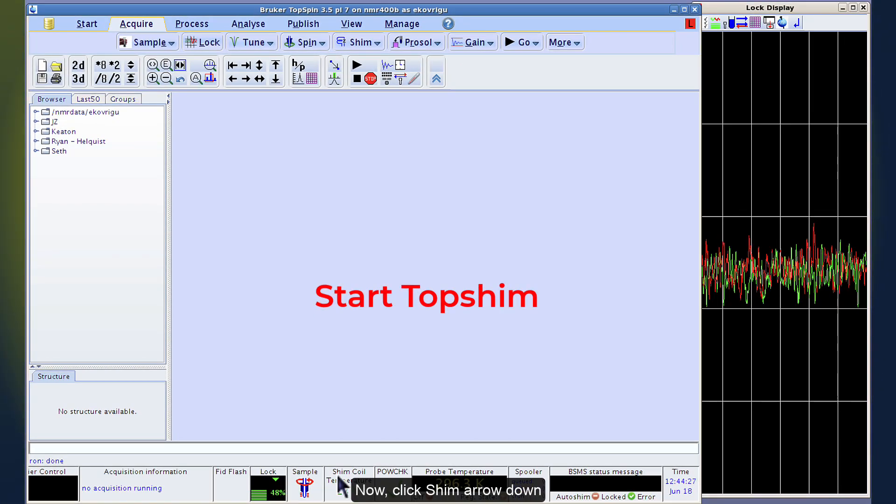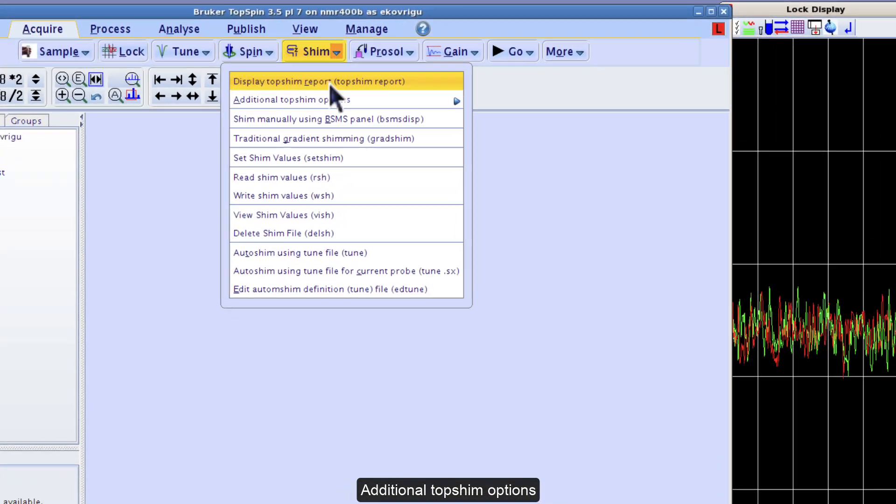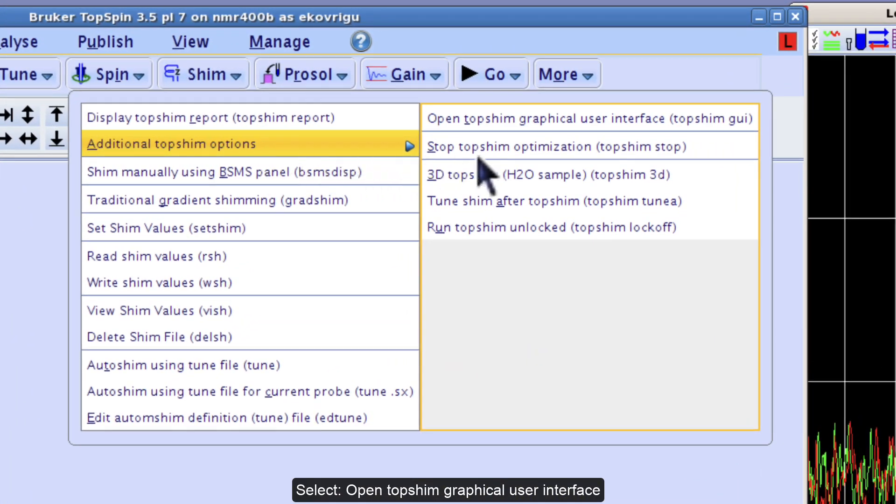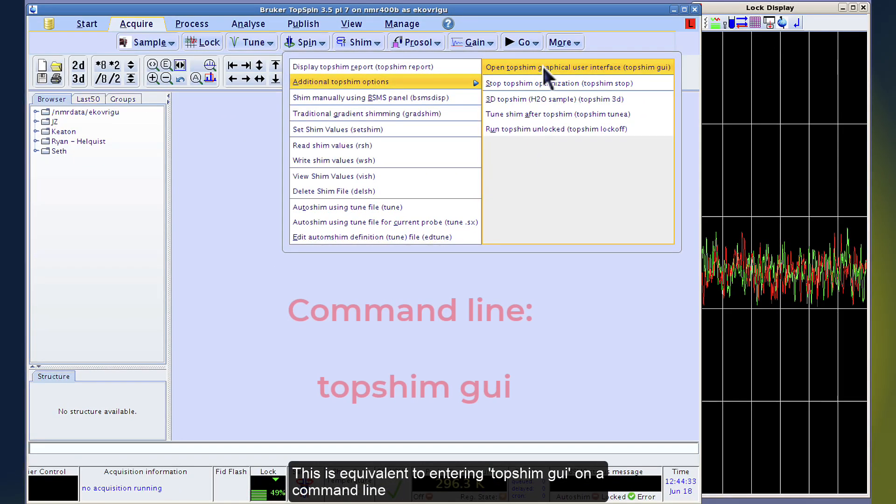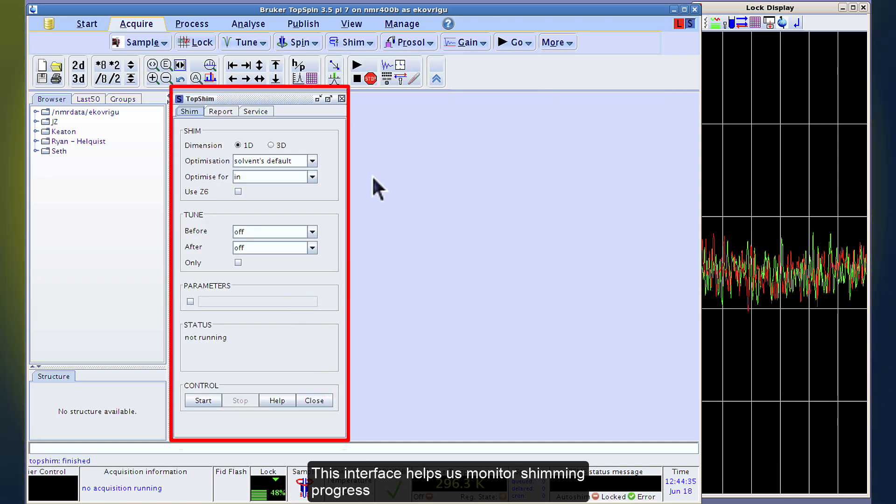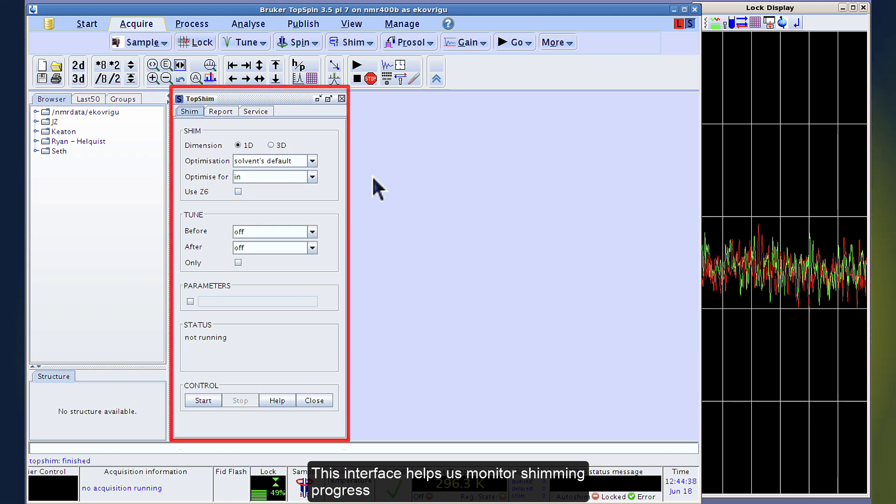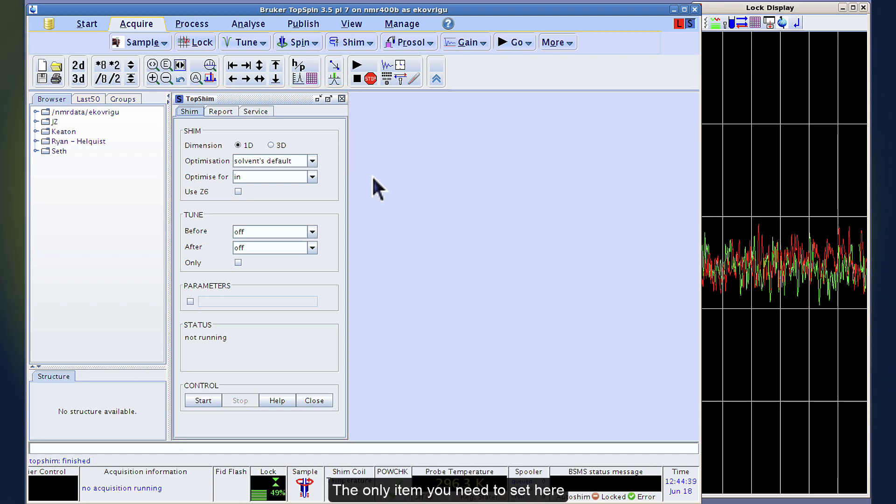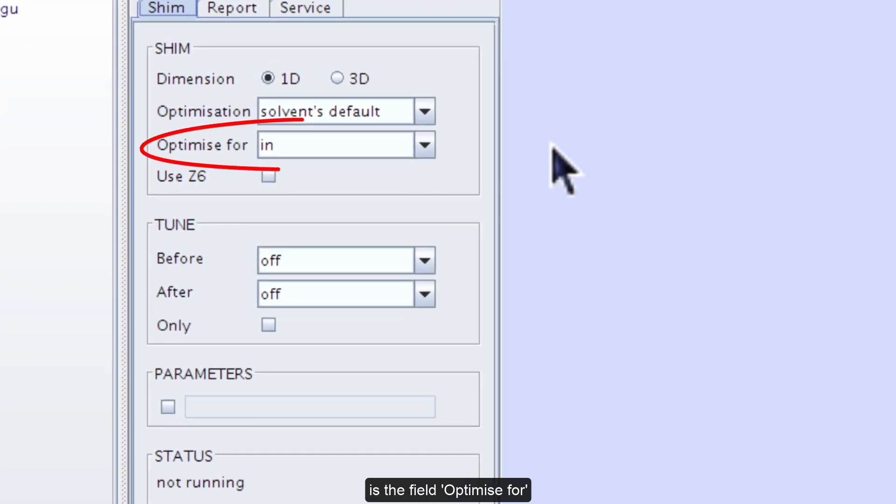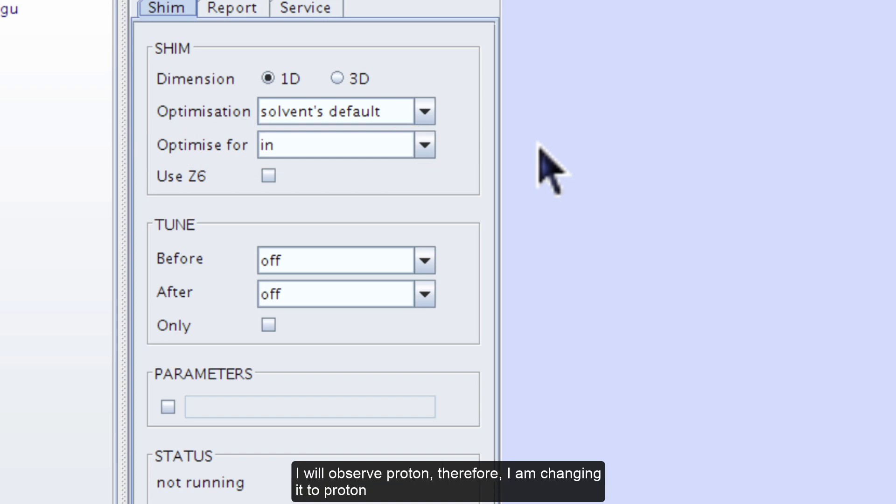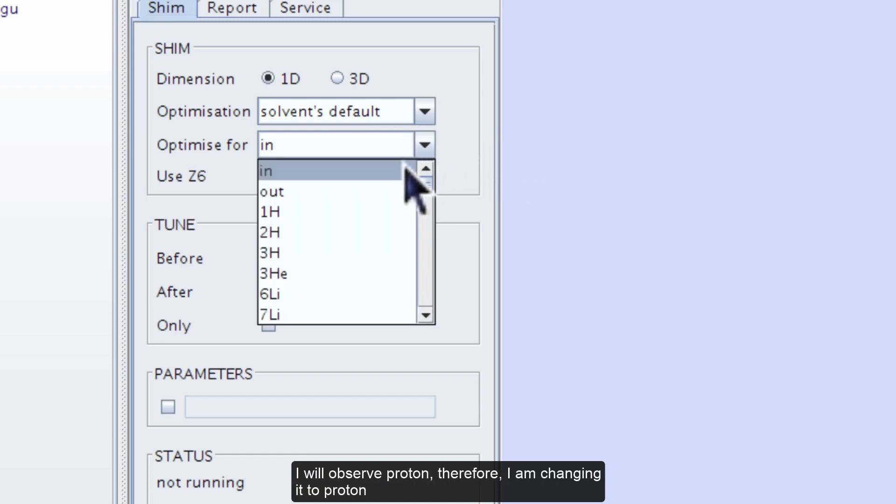Now click shim arrow down, additional topshim options. Select open topshim graphical user interface. This is equivalent to entering topshim GUI on a command line. This interface helps us monitor shimming progress. The only item you need to set here is the field optimize for that should show the nucleus you plan to observe. I will observe proton. Therefore, I am changing it to proton.